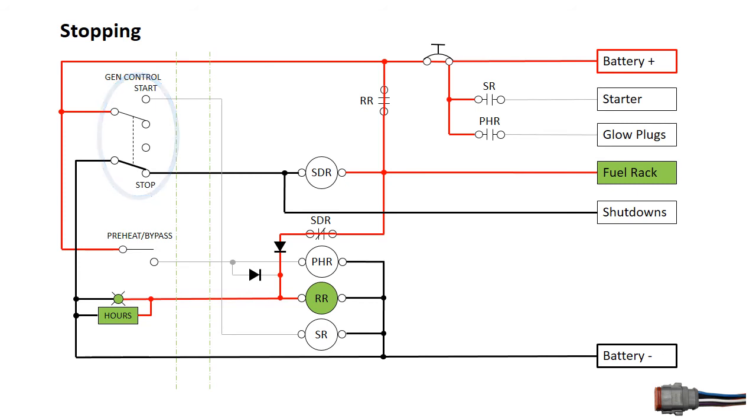Activating the shutdown circuit energizes the shutdown relay coil, which opens the run relay latching circuit and removes power from the run relay control circuit. This de-energizes the panel meters and the run relay coil. The run relay contacts open and remove power from the ignition circuit, turning off the fuel system and the shutdown relay, and we can release the stop switch.